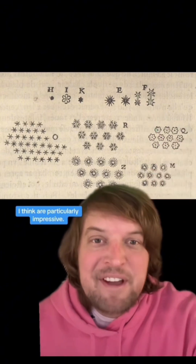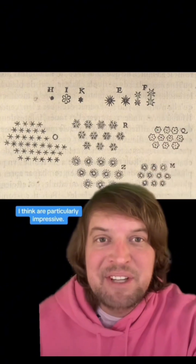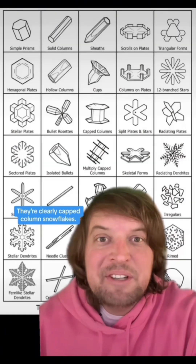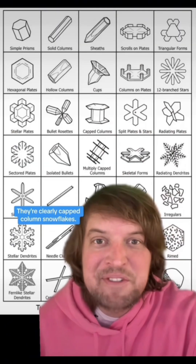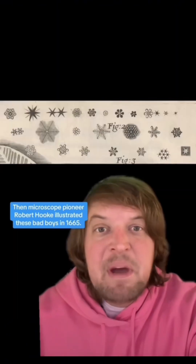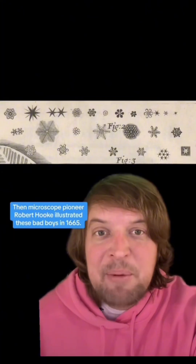And these ones up here at F I think are particularly impressive — they're clearly capped column snowflakes. Then microscope pioneer Robert Hooke illustrated these bad boys in 1665.